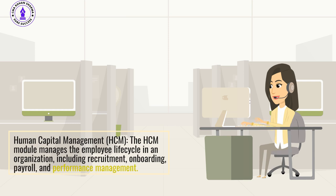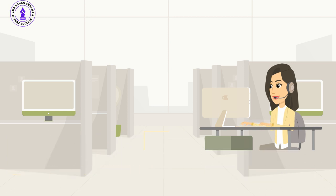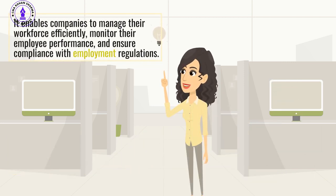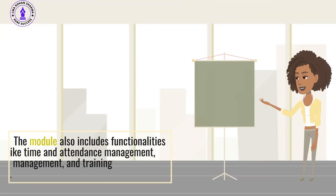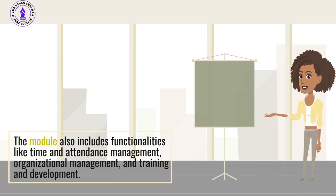Human Capital Management: The HCM module manages the employee lifecycle in an organization, including recruitment, onboarding, payroll, and performance management. It enables companies to manage their workforce efficiently, monitor their employee performance, and ensure compliance with employment regulations. The module also includes functionalities like time and attendance management, organizational management, and training and development.